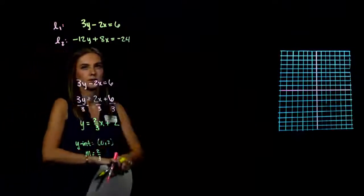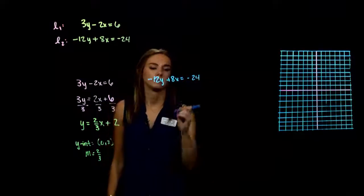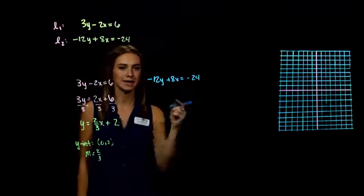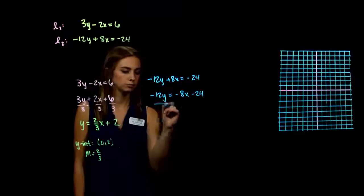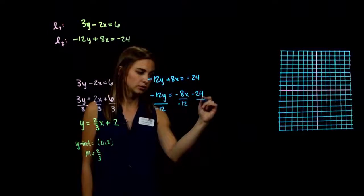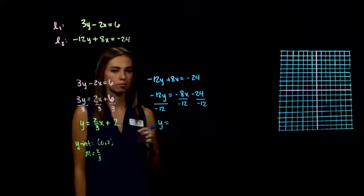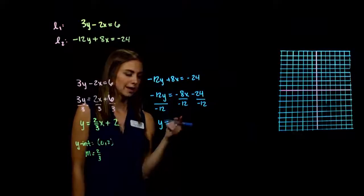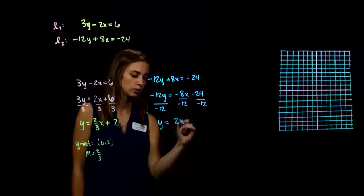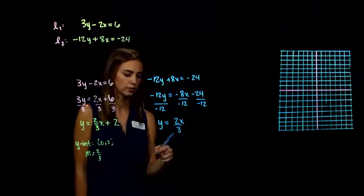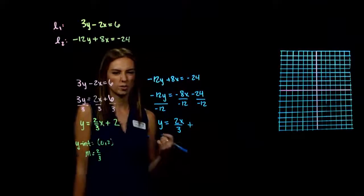For line 2: negative 12y plus 8x equals negative 24. Subtract 8x from both sides to get negative 12y equals negative 8x minus 24. Divide everything by negative 12. The coefficient simplifies: 8 over 12 reduces (dividing by 4) to 2 over 3 — positive since negative divided by negative. The constant: negative 24 divided by negative 12 equals positive 2. So y equals two-thirds x plus 2.